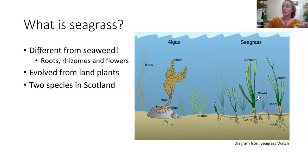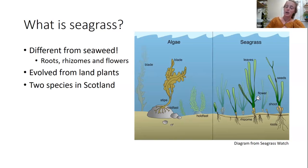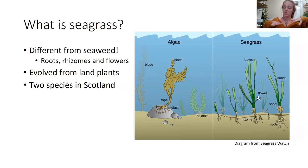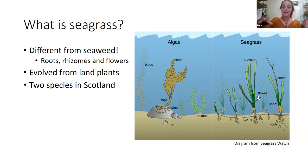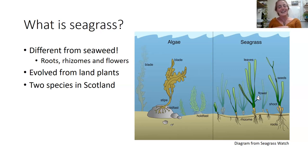Seagrass is not algae — it's related to land plants, flowering plants called angiosperms, so it's related to daisies, sunflowers, and grasses that make meadows on land. This means it has flowers, it has roots, and it has things called rhizomes, just like a strawberry. The rhizomes grow horizontally underground, which means it can reproduce asexually and therefore spread quite quickly in an area. Seagrass evolved from land plants and moved into the sea about 100 million years ago.